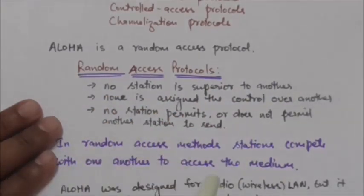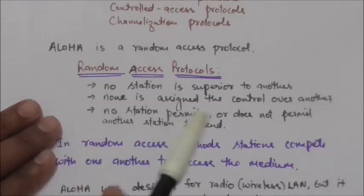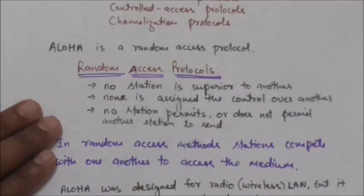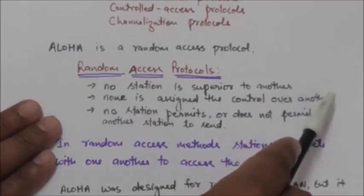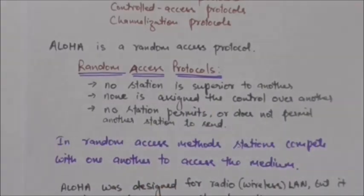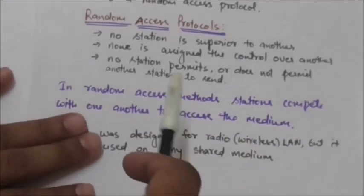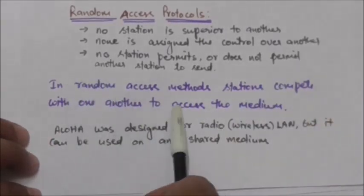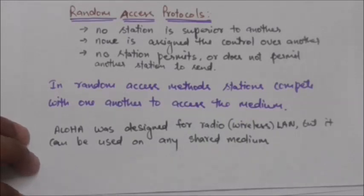Aloha is a random access protocol. In random access protocols, no station is superior to another, none of the stations is assigned control over another, and no station permits or does not permit another station to send. In random access protocols, a station that has data to send uses a procedure defined by the protocol to decide whether or not to send, and this decision depends on the state of the medium — whether it is idle or busy. Stations compete with one another to access the medium.